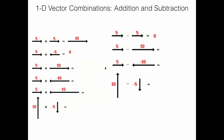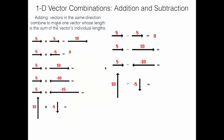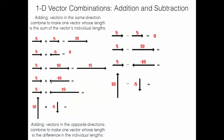Now let's look at combining vectors. Let's refresh vector addition and subtraction in one dimension. For addition: vectors in the same direction combine to make one vector whose length is the sum of the individual lengths — for example, magnitude 5 plus magnitude 5 gives magnitude 10. Two vectors in opposite directions with equal magnitude, like 5 and −5, give a zero vector. Vectors 5 and 10 give magnitude 15. For 5 plus −10, we combine vectors in opposite directions and get a vector whose length is the difference — 5 — pointing in the direction of the larger vector.